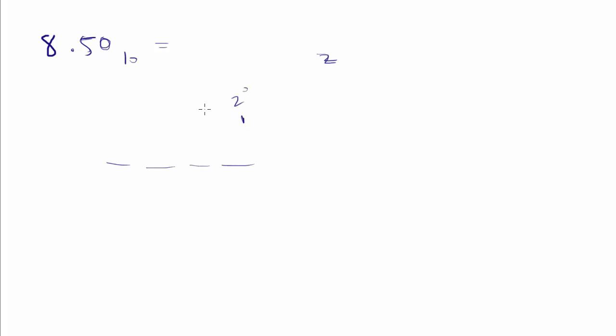How are we going to do that? Well, we know on this end that if we take 2 to the 0, that's the 1's position; 2 to the 1 is the 2's position; 2 to the 2 is the 4's position; 2 to the 3 is the 8's position. But how do we figure out what's on this side of the decimal? What we do is we have 2 to the negative 1 — we just continue on like on a number line. That was the breaking point there, 0 on the positive side, and then we go 2 to the negative 2 and 2 to the negative 3 and so on.